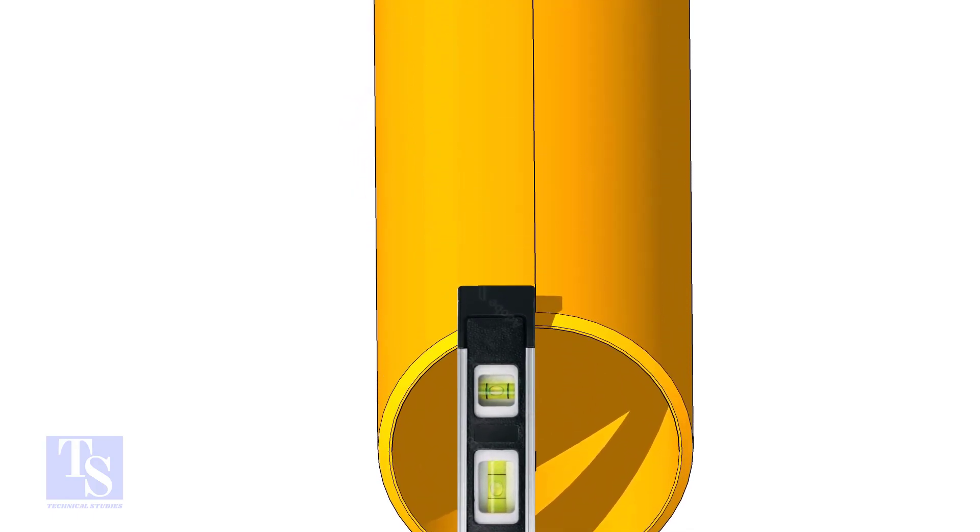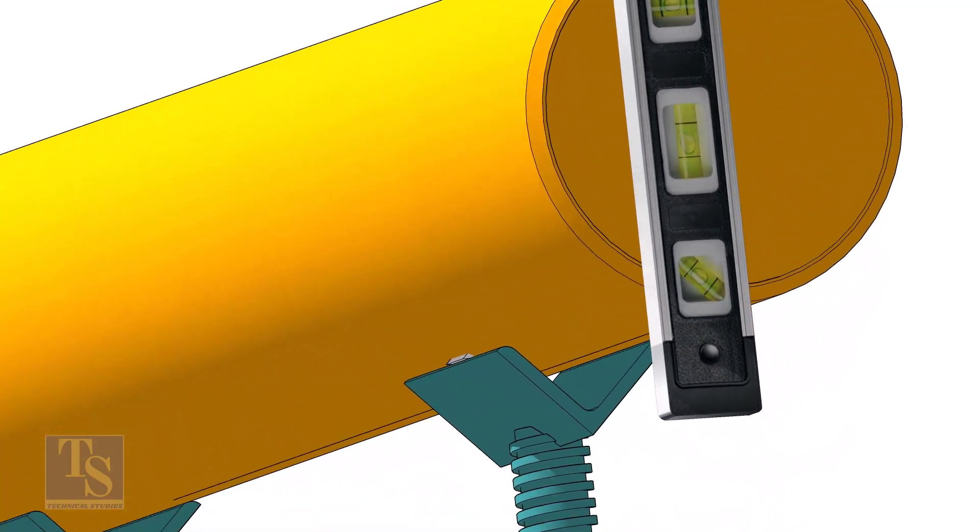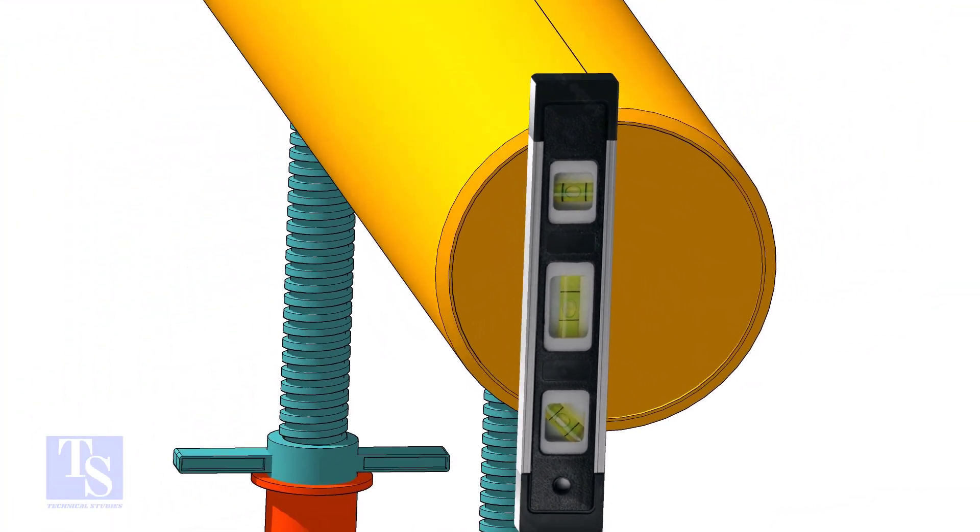Level the pipe horizontally and vertically as shown. After leveling, arrest the pipe to stop it from rotating.